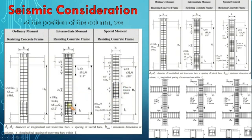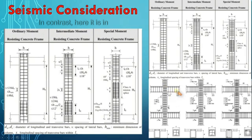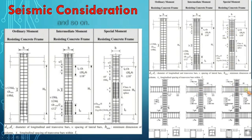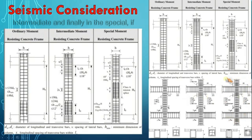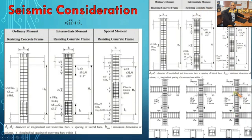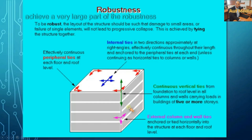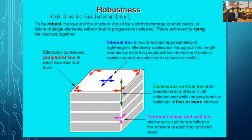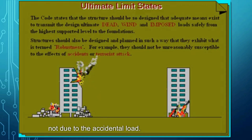Comparing the three frame types, we find that stirrup spacing decreases from ordinary to intermediate to special moment resisting frames. The reinforcement lap splice position also differs — in ordinary frames it is at mid-height, while in special frames it is in the lower third or at the first connection. The camera configurations also differ at each level. If you are in a high seismic zone and follow the special moment resisting frame requirements, you will achieve a very large part of the robustness requirements — though due to lateral load, not accidental load.